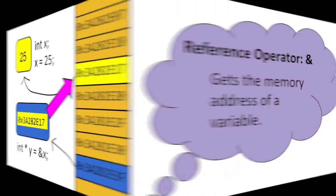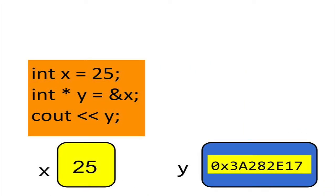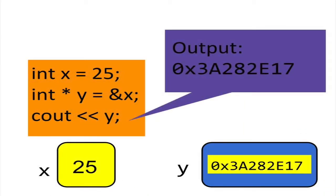So remember, putting an ampersand symbol in front of a variable returns the memory address of that variable. So if you output the contents of y, you will get the address of x.